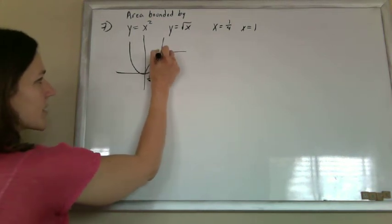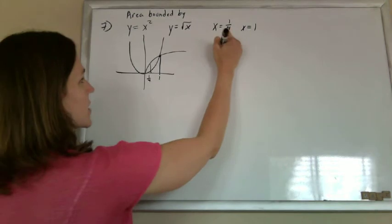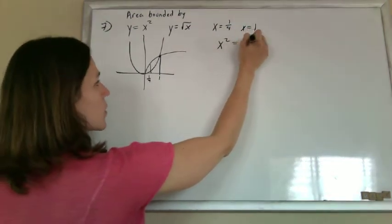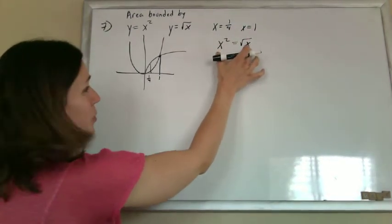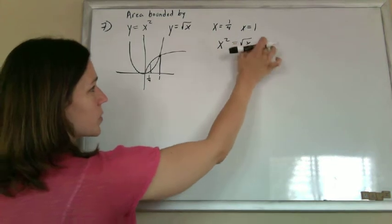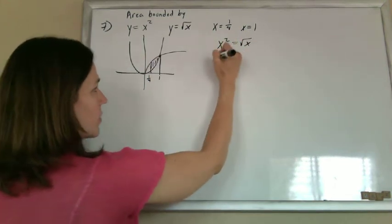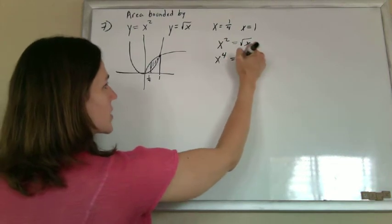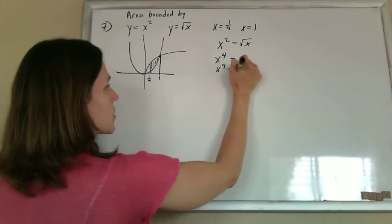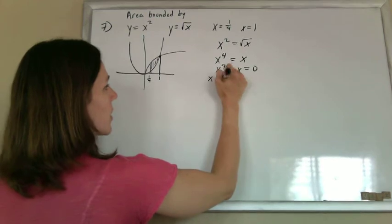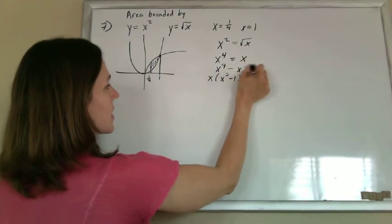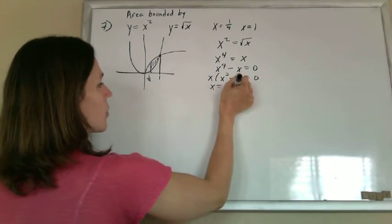I know they intersect at one. I should have checked that first, because I want to know when x squared equals x. You could guess that it equals one, because one squared equals the square root of one. That happens a lot. But if you didn't want to do it, you could actually square both sides, subtract the x, factor out the x, and say that x is zero or one based on that.